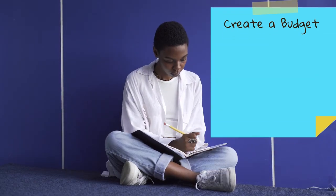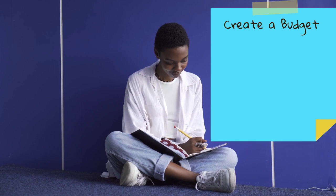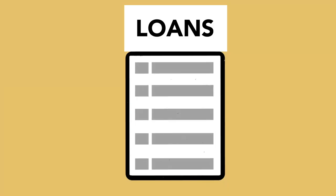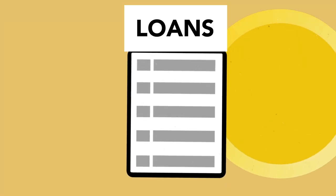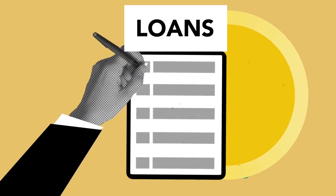Create a budget. Develop a comprehensive budget that includes all your monthly expenses and allocate a specific amount for student loan payments in your budget.